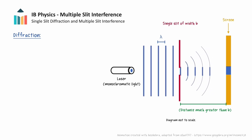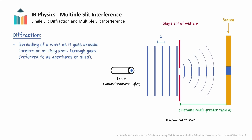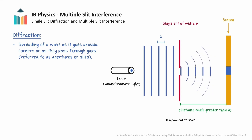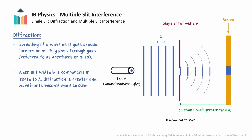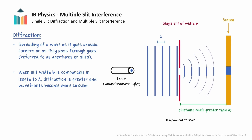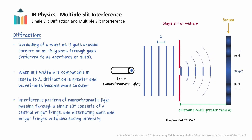Diffraction is the process of waves changing direction without being incident at a boundary between two different media. It causes the spreading out of a wave around corners and as they pass through gaps, commonly referred to as apertures or slits. Moreover, as the slit width b becomes comparable in length to the wavelength lambda, diffraction is greater and the wavefronts become more circular. Since the light waves are diffracted, we end up observing an interference pattern consisting of a central bright fringe bordered by alternating dark and bright fringes with decreasing intensity.